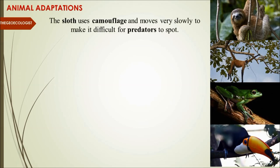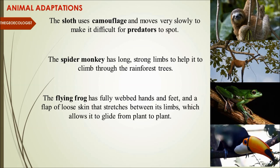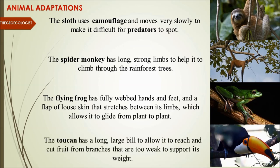Animals also show unique adaptations. The sloth uses camouflage and moves very slowly to make it difficult for predators to spot it. The spider monkey has long, strong limbs and a tail, allowing it to hang on tree branches and feed on fruits. The flying frog has fully webbed hands, feet, and a flap of loose skin between its limbs that allows it to glide from plant to plant. The toucan has a long, large bill to reach and cut fruits from branches — adaptations ranging from camouflage to specialized beaks.